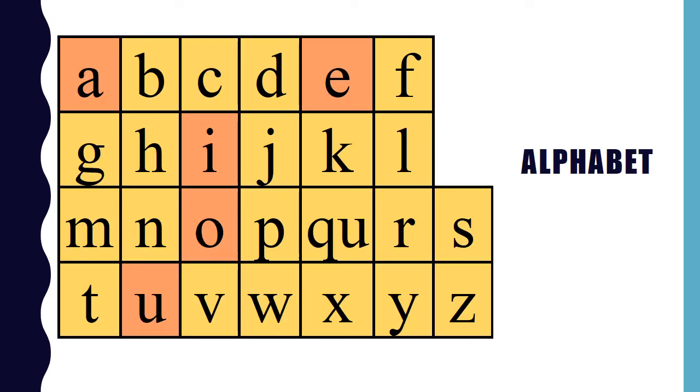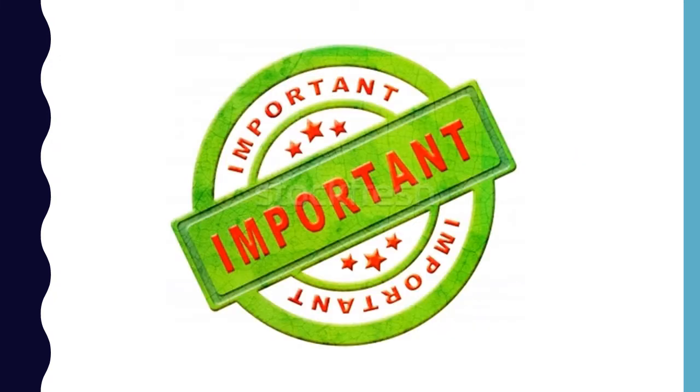This is the alphabet. There are 26 letters in the alphabet. Each letter has its own sound. Knowing letters and their sounds is important because it helps us learn to read.